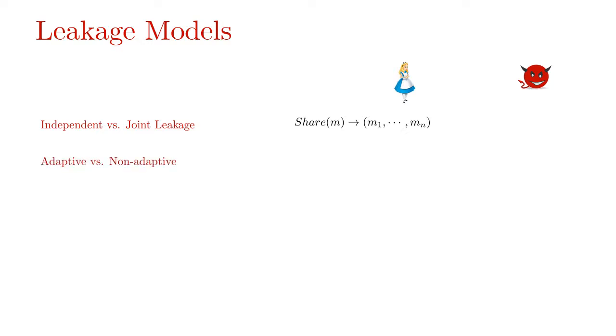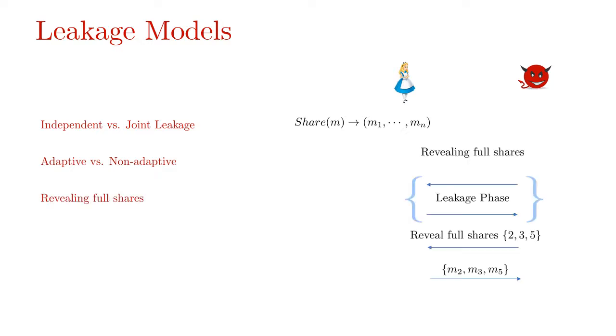Another distinction is in adaptivity, where a model is said to be adaptive if the adversary can observe leakage on some shares and then choose the shares and leakage functions to query next. Most leakage models also support to reveal some full shares along with the partial leakage on shares obtained through the leakage functions. Independent of this categorization, another leakage model that was considered in literature is the affine leakage model where the leakage function can act on all shares in an affine manner collectively.